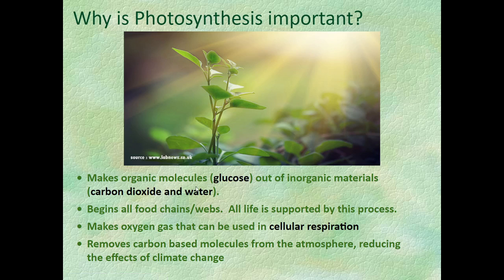Photosynthesis makes organic molecules — specifically glucose — out of inorganic materials: carbon dioxide and water. It is the beginning of all food chains and food webs. It also produces oxygen gas, which can be used in cellular respiration by almost all living things. Some very simple bacteria are exceptions where oxygen is poisonous, but almost all living things use oxygen for cellular respiration.